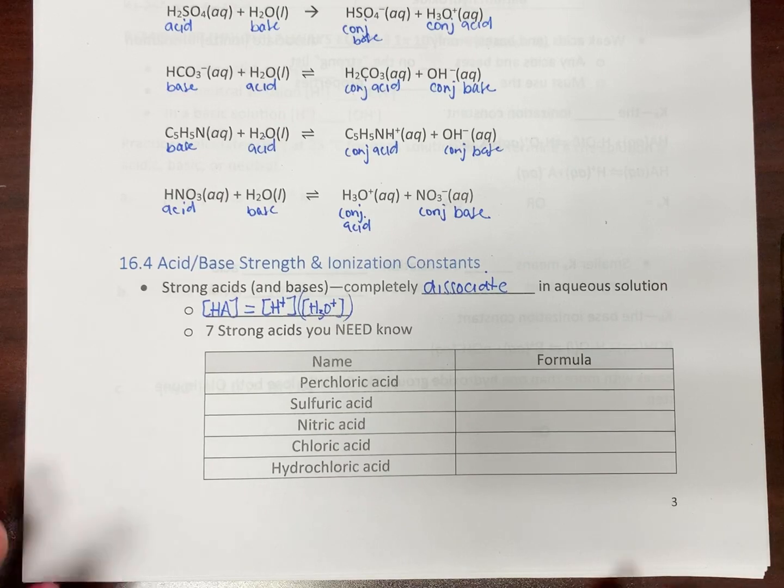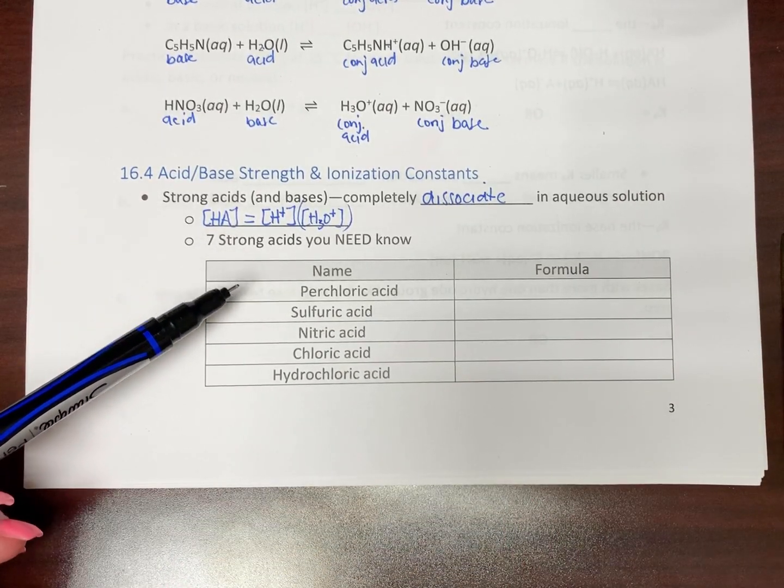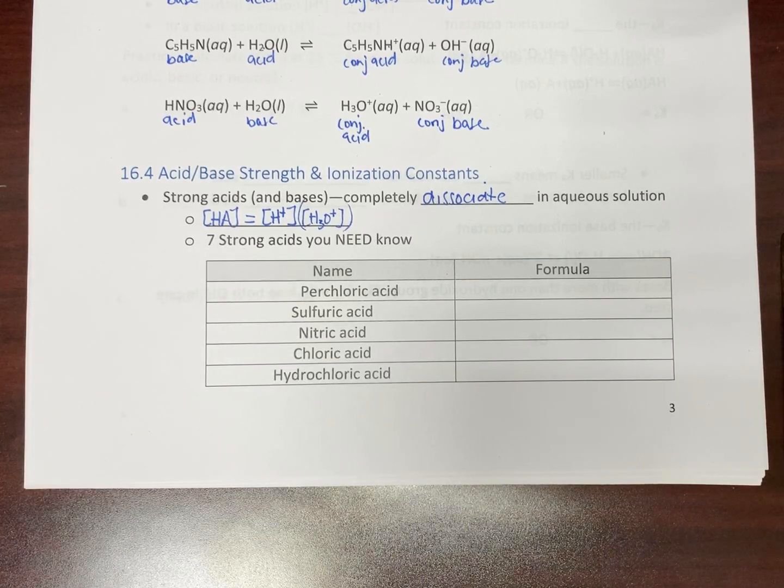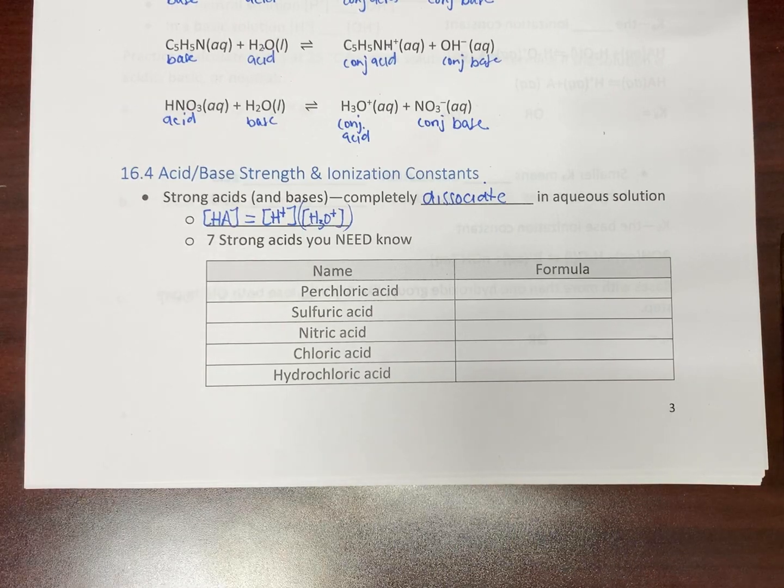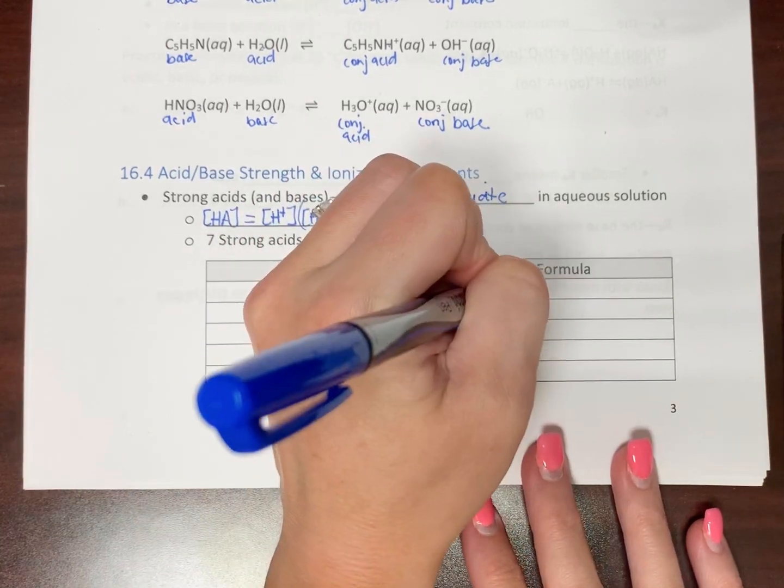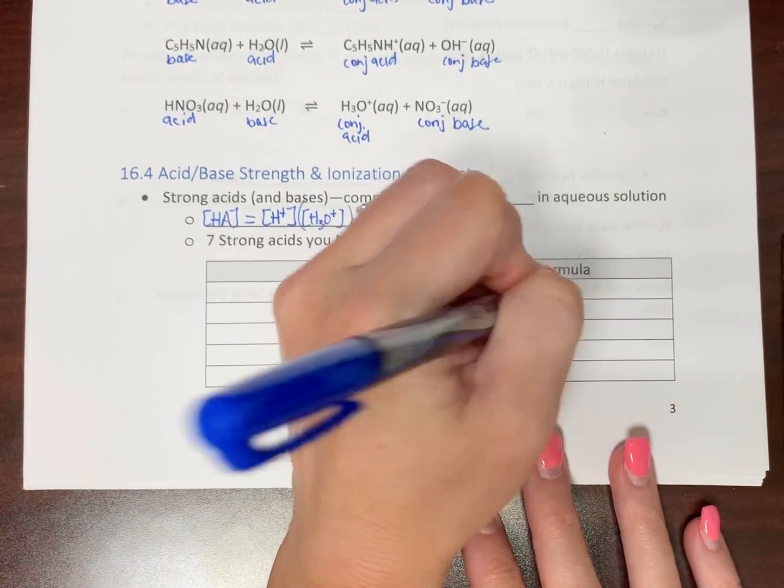Okay, so there are seven acids that you need to know. This goes on to the next page. Hopefully you may remember some of these. If you don't, make some flashcards. You need to know these because I'm not going to tell you if it's a strong acid or a strong base. I expect you to know them. Okay, so perchloric acid, HClO4.